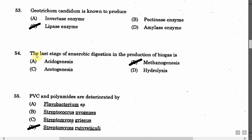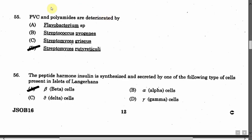The next question is: The last stage of anaerobic digestion in the production of biogas is — Option A: Acetogenesis. Option B: Methanogenesis. Option C: Acidogenesis. Option D: Hydrolysis. The correct answer is Option B, that is Methanogenesis.